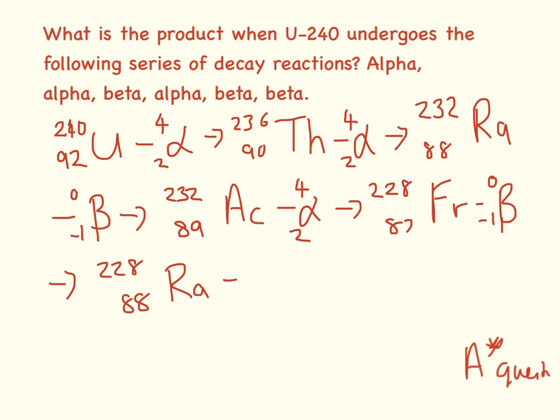The last one is going to undergo beta radiation again. So 228 minus 0 is 228. 88 minus minus 1 is 89, which is actinium.